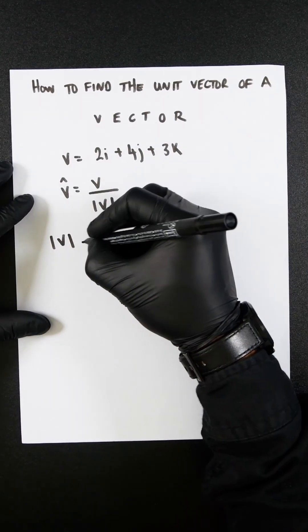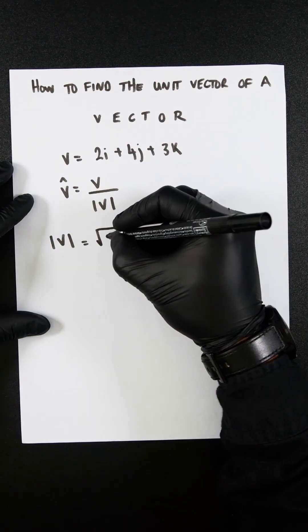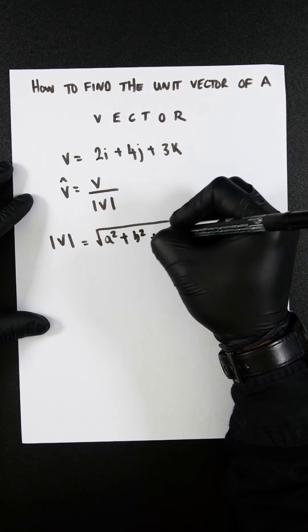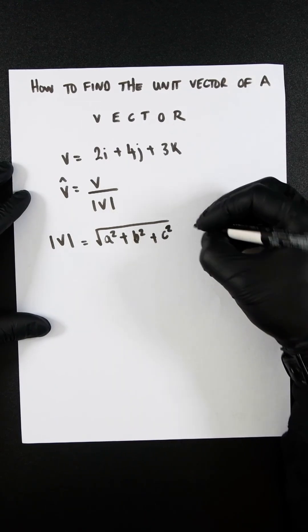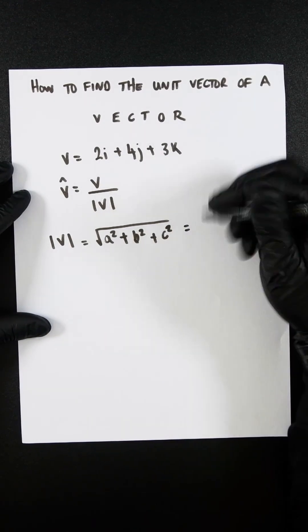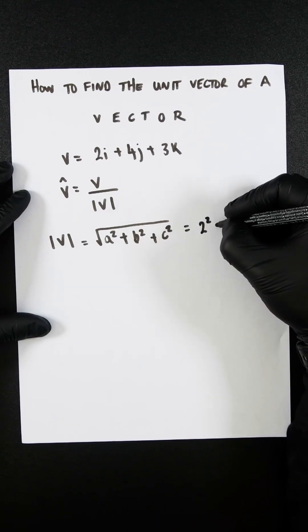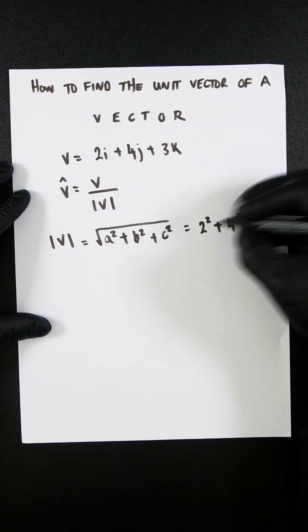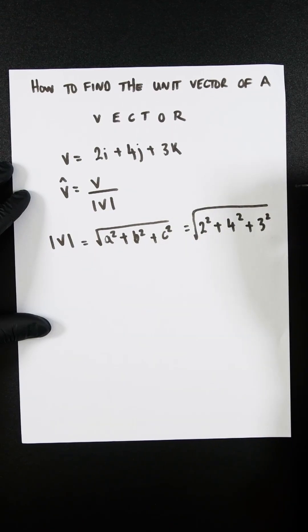To find the magnitude of the vector, it would be the same as doing the square root of a squared plus b squared plus c squared, which in this case is going to be 2 squared plus 4 squared plus 3 squared, all square rooted.